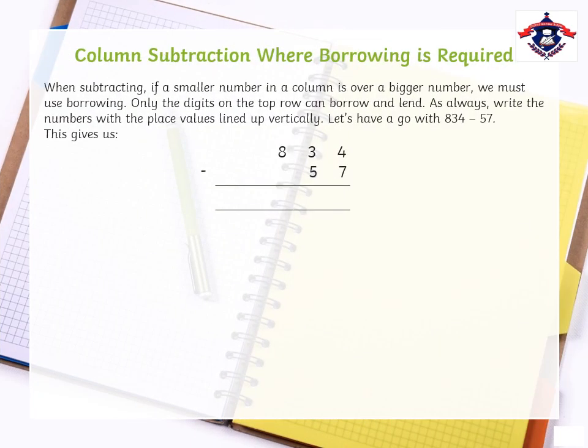Column subtraction where borrowing is required. When subtracting, if a smaller number in a column is over a bigger number, we must use borrowing. Keep in mind, only the digits on the top row can borrow and lend.